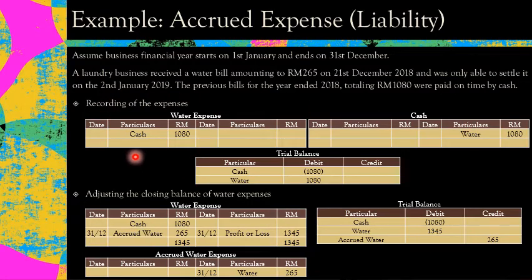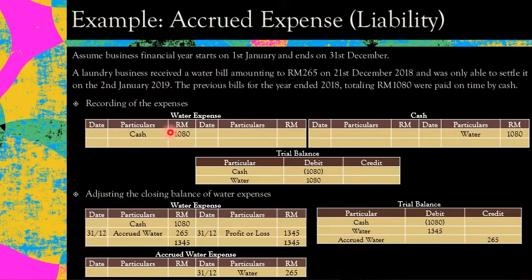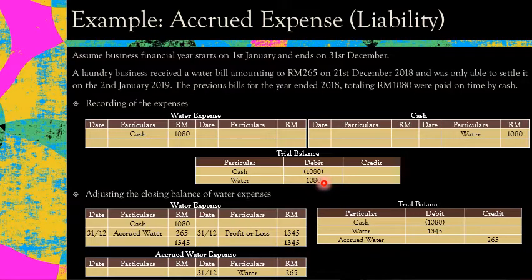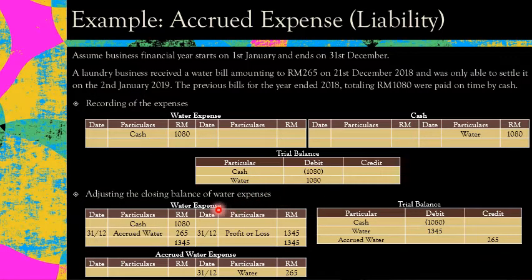In your water expense account, you already have 11 entries for the payment of water expenses from January until November totalling RM1,080. If you don't adjust for the amount unpaid in December, your trial balance will show expenses of only RM1,080. But the actual expense is more than that because the December bill has not been paid yet. So we need to adjust the closing entries of the water expenses.